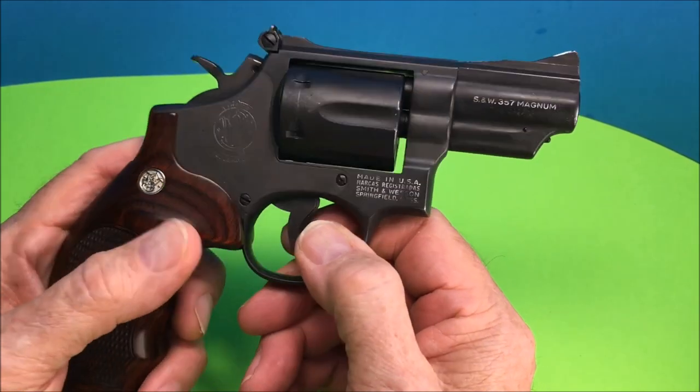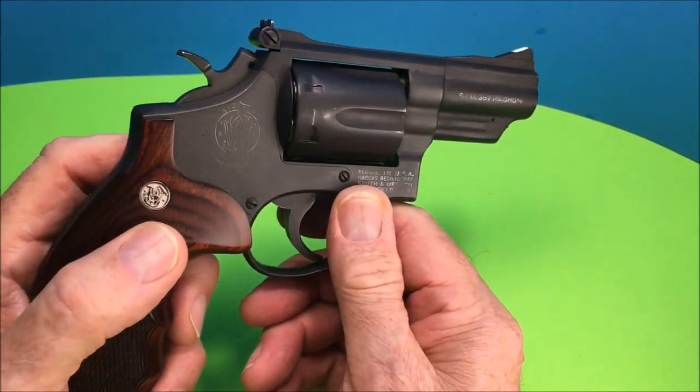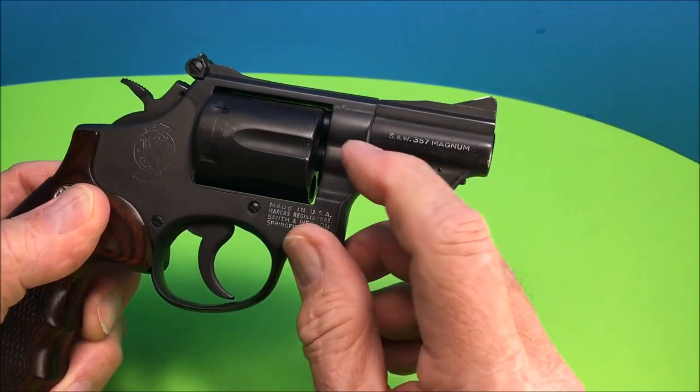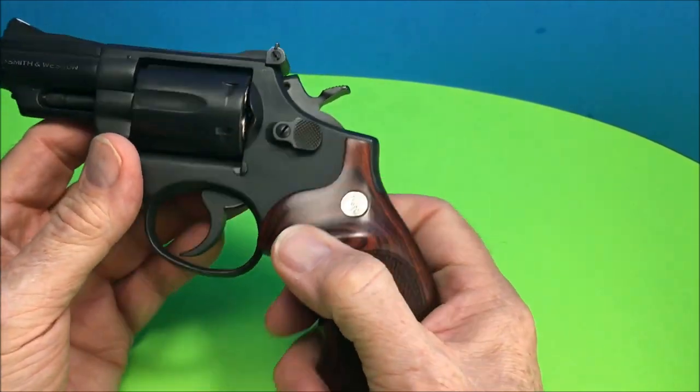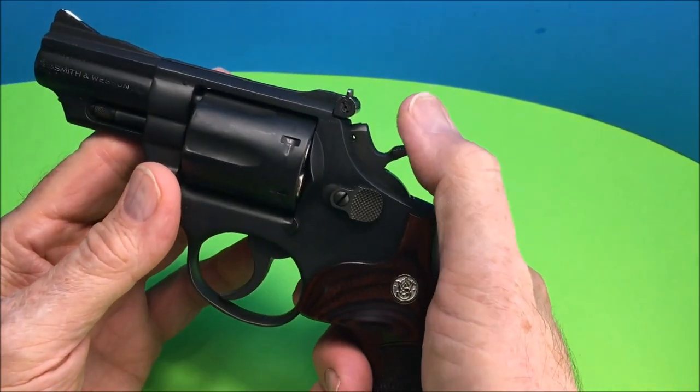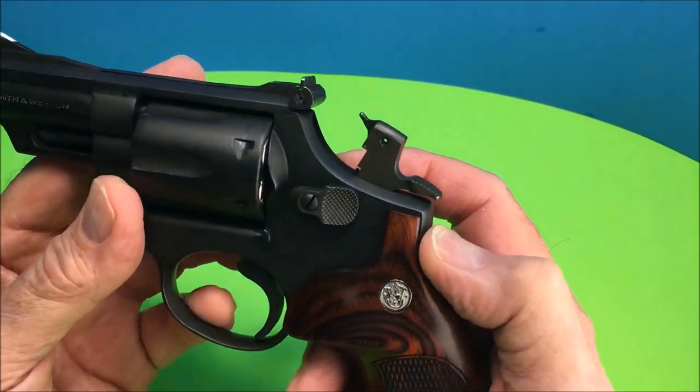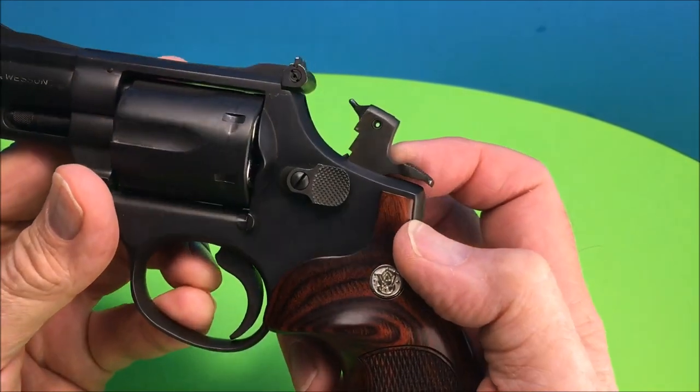19-3 and 19-4 had the recessed cylinder and pinned barrel, see the pin. After that they stopped pinning the barrel and they stopped recessing the cylinder. This one still has the firing pin or the hammer nose on the hammer.